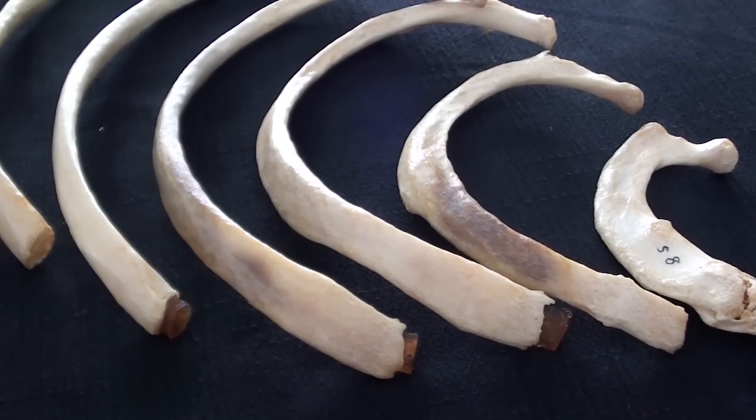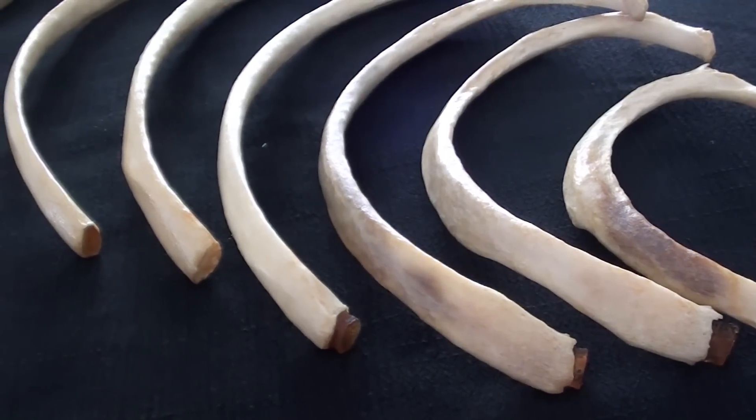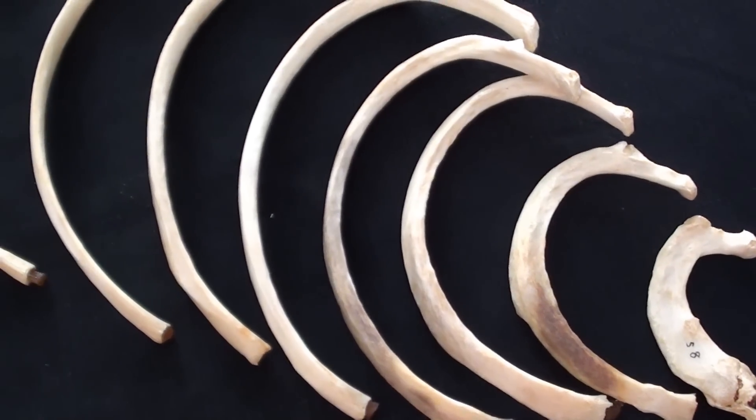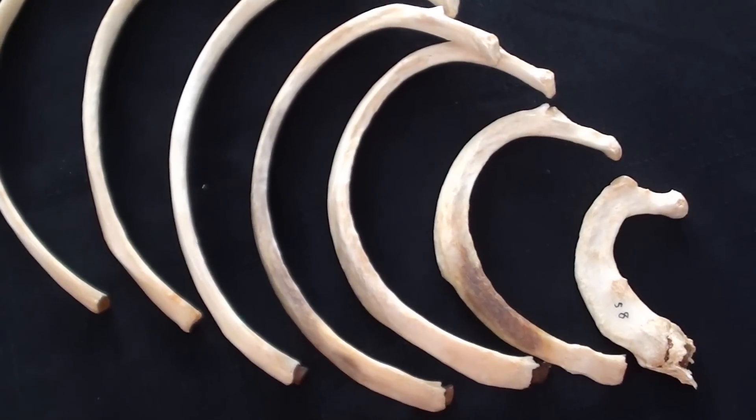Ribs. There are twelve pairs of ribs in the human body. As we can see them here,